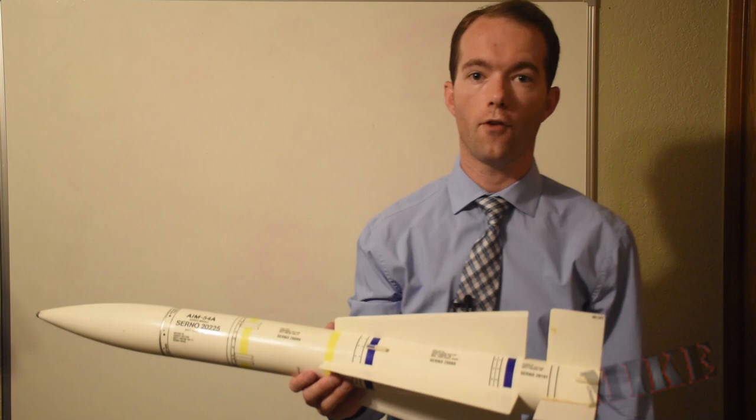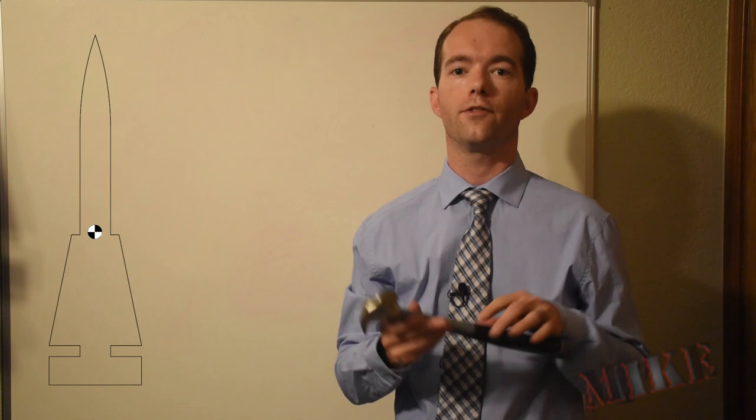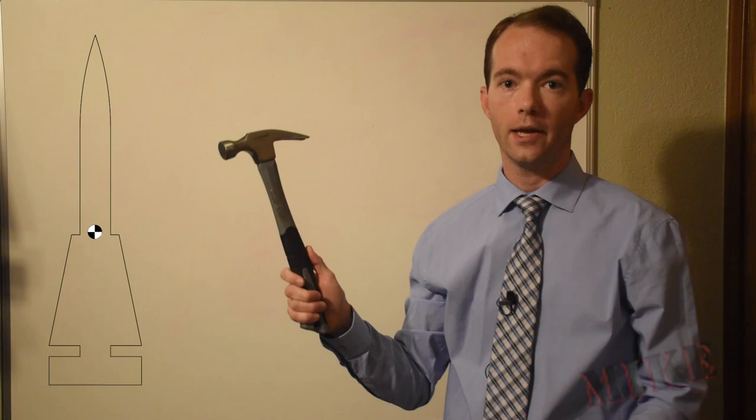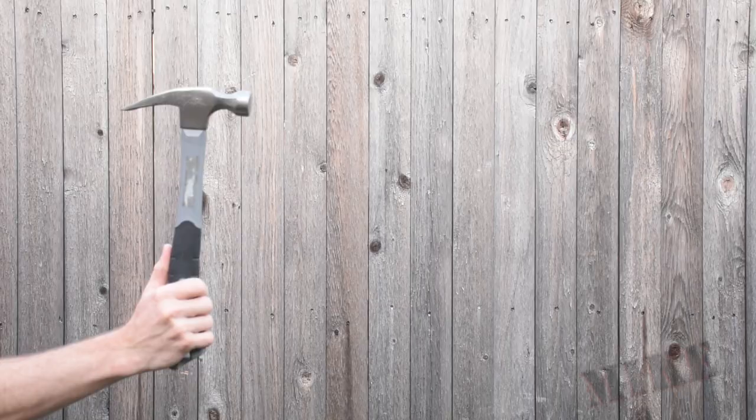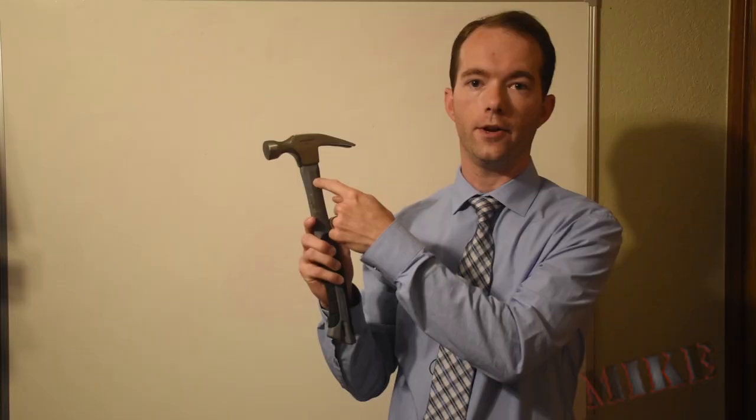The center of gravity is the average position of all the mass in an object. Now, I've got a video or two on how to calculate centers of gravity, so go check those out. An object behaves as if all of its mass is concentrated in one spot. If I throw this hammer through the air, it's going to spin, and it's going to spin around its center of gravity.